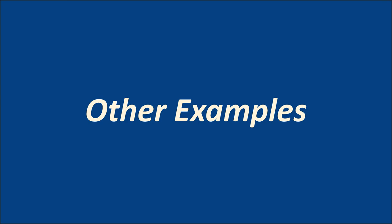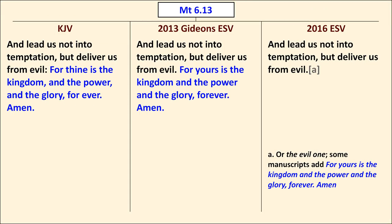We move now to other passages — a lengthy section, but I'll attempt to move quickly. The first passage is Matthew 6:13, the end of the Lord's Prayer, which in the King James Version includes, "For thine is the kingdom and the power and the glory forever." The Gideon's ESV here follows the Textus Receptus and has a similar ending. The 2016 ESV does not.